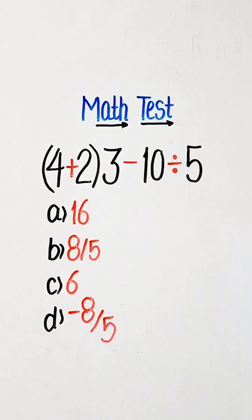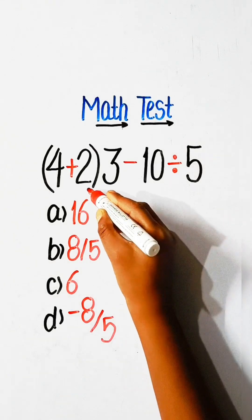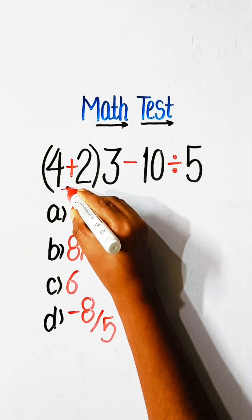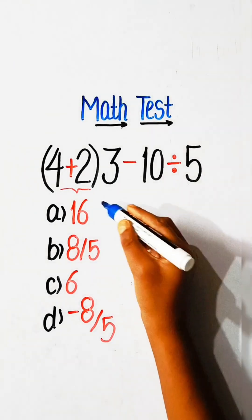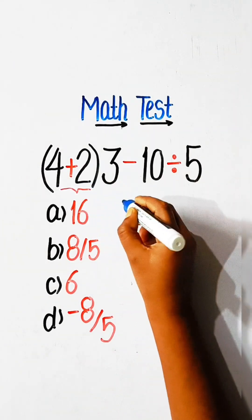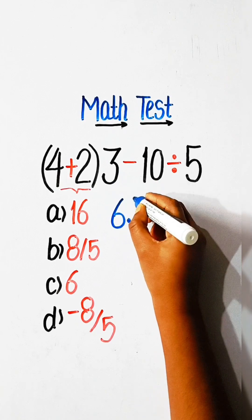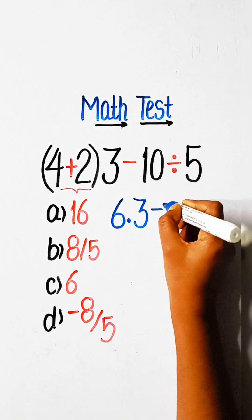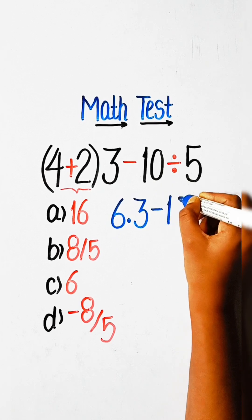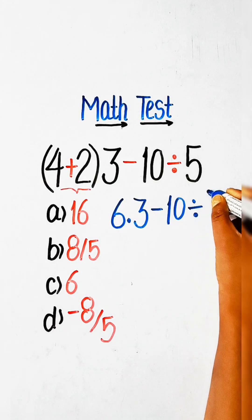Comment your answer. Let's solve this. First of all, we have to solve the bracket part: 4 plus 2 is 6, multiply by 3 minus 10 divided by 5.